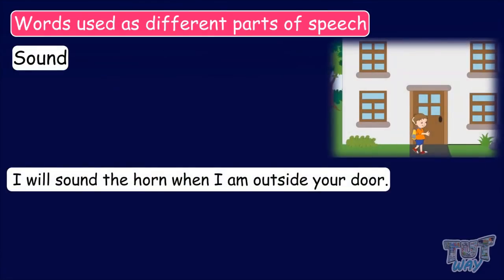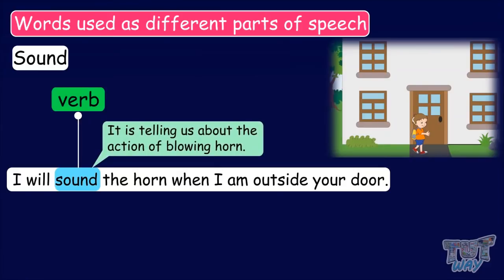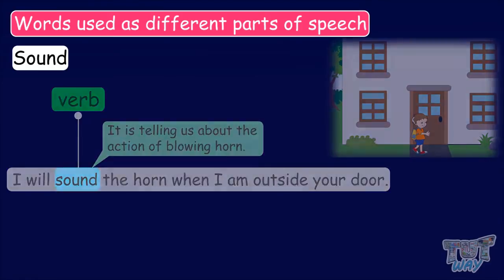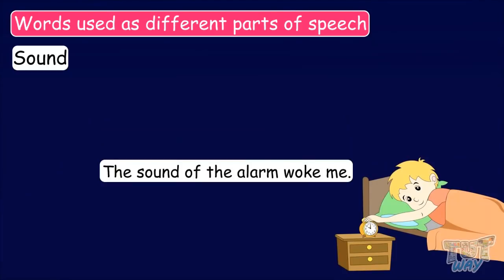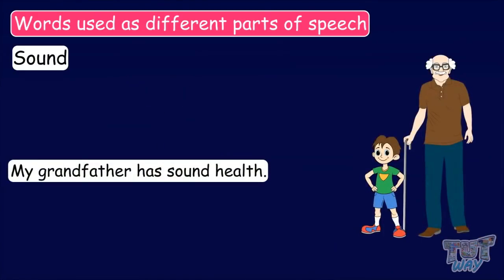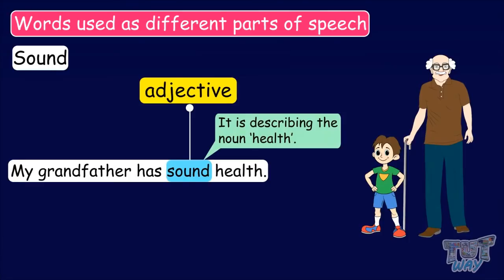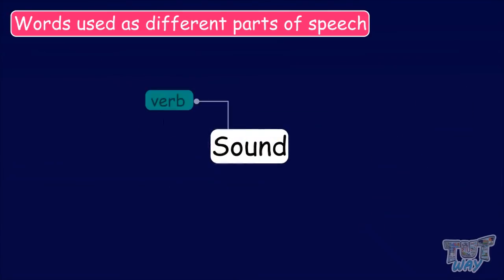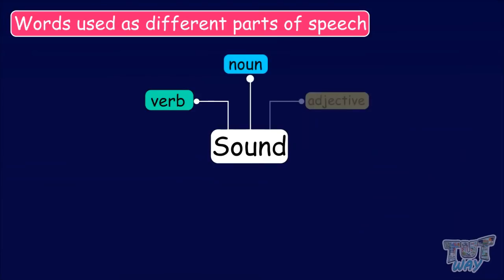Now let's learn about our next word, 'sound'. I will sound the horn when I am outside your door. Here, the word sound is a verb, as it is telling us about the action of blowing the horn. The sound of the alarm woke me. Here, the word sound is a noun, as it's the naming word for the noise made by something. My grandfather has sound health. Here, the word sound is used as an adjective, as it is describing the noun health. So, the word sound can be used as a verb, a noun, and an adjective.